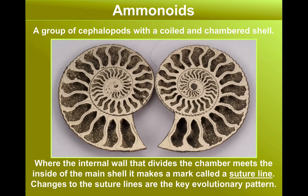You can see on the image here the different chambers, each separated by a wall. This wall grows after the main shell, and where that wall is in contact with the main shell, it creates a mark that we call a suture line. And it's this suture line that changes with evolution.